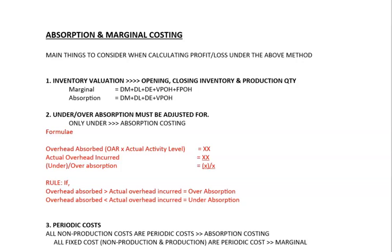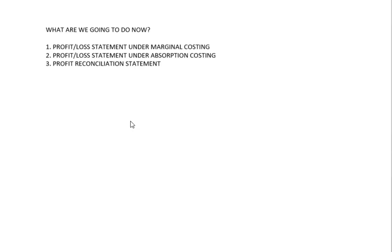This topic of absorption costing and marginal costing mostly comes under managerial accounts or management accounts. Many students are struggling in this area, so I'm going to explain it step by step using one question. First, we are going to prepare a profit or loss statement under marginal costing, secondly under absorption costing, and then we are going to reconcile these two profits, because we will be getting two different profit figures under each method.